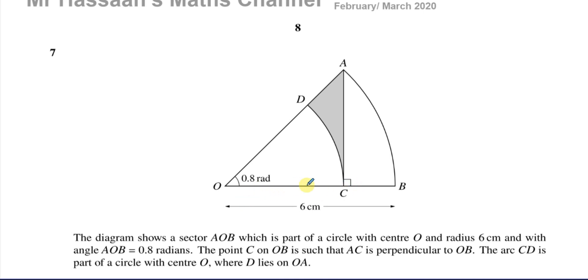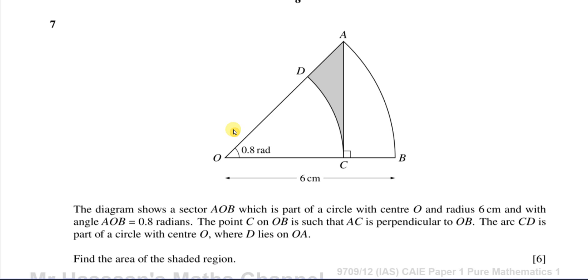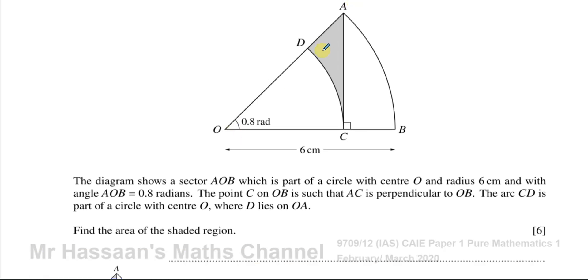It's part of a center O where D lies on OA. So this is another circle with a different radius, a smaller radius. It's not 6, we don't know what the radius is. But we know it shares the same angle, 0.8 radians. And this line AC seems like it's a tangent to that circle because it touches at 90 degrees there at C. Alright, that's all they've given us. And they said find the area of the shaded region.